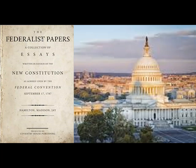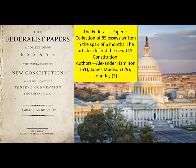When the Constitution is out there and they're trying to convince the states to ratify it, you get something known as the Federalist Papers — a collection of 85 essays written in the span of six months by three ardent Federalists: Alexander Hamilton, James Madison, and John Jay. They basically wrote these articles saying, look, here's why you should get rid of the Articles and embrace the Constitution.